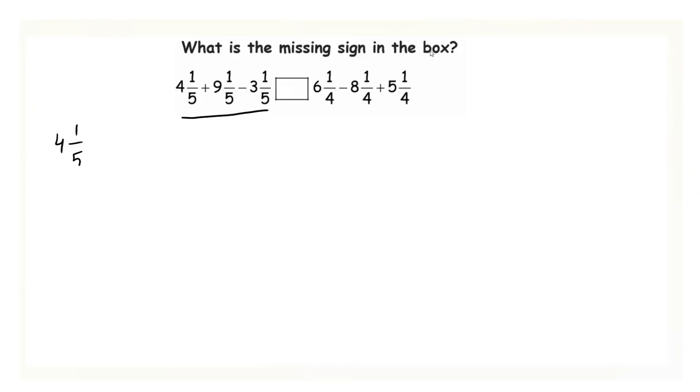That means 4 1 by 5 can be written as 5 into 4 which is equals to 20. 20 plus 1 is equals to 21 over 5. Similarly 9 1 by 5 can be written as 5 into 9, 45. 45 plus 1 is 46 over 5. Then 3 1 by 5 can be written as 5 into 3, 15. 15 plus 1 is 16 over 5.